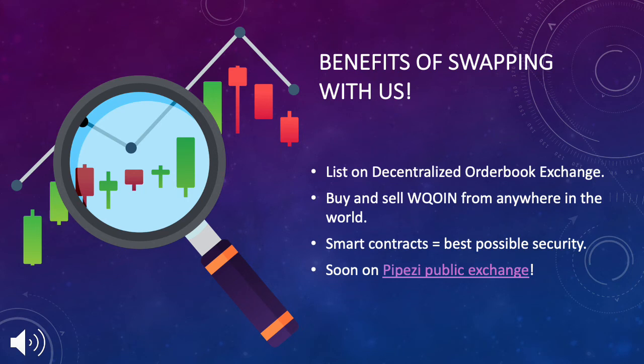If you use us, you can immediately list your W coins on the independent token decentralized exchange. This is a decentralized order book exchange that enables anyone from anywhere in the world to buy and sell W coins. Being a decentralized exchange it runs on smart contracts, so safety and security is of the highest possible standard. One of the best things is that our W coin will soon be listed on the Pipeasy public cryptocurrency exchange, where our W coin will be paired with other community tokens and even stable coins, giving everyone the possibility to liquidate their coins for other digital assets.